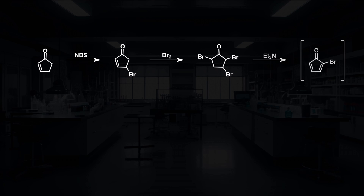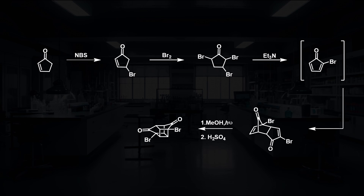The synthesis started from cyclopentanone, which was treated with NBS, bromine, and triethylamine to generate 2-cyclopentadienone, which undergoes a spontaneous Diels-Alder reaction to form the corresponding dimer. When this material is treated with UV light, it can undergo a photochemical 2+2 cyclisation. A Favorskii rearrangement was used to generate the cubane-1,4-dicarboxylic acid.